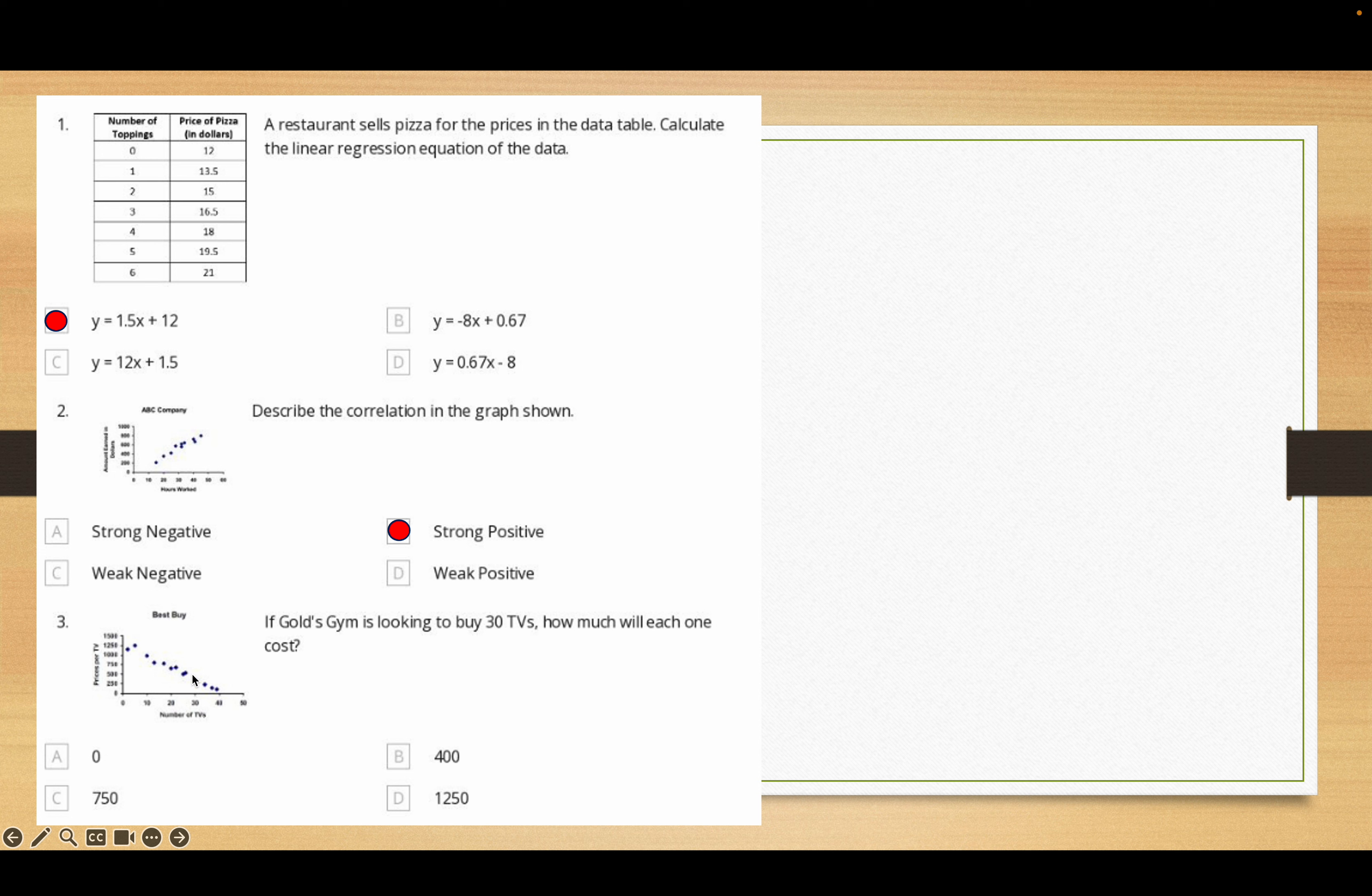Does the correlation describe it? Well that's positive because it's going up and it's pretty strong because they're almost in a straight line, so this would be strong positive. The next one, first off you notice it's negative right away because it's going down. How much will one cost if you buy 30 TVs? So you look at 30, you go up to the graph, I'm about here, I go over, I'm a little under 500, so it has to be 400.